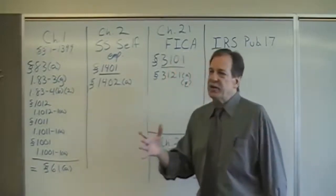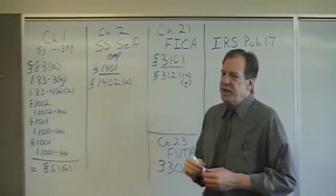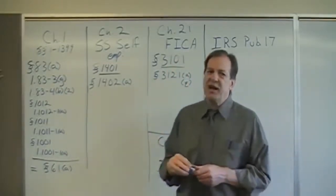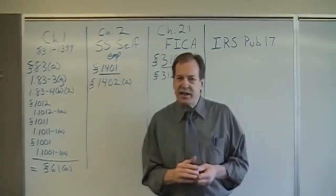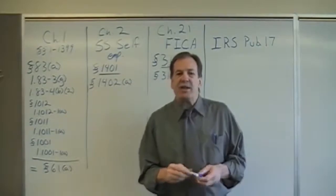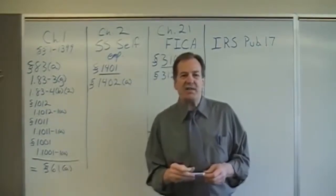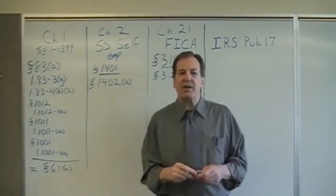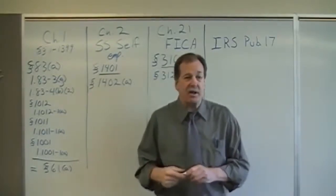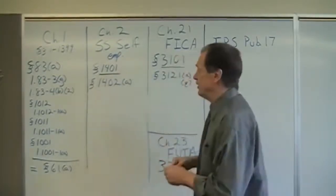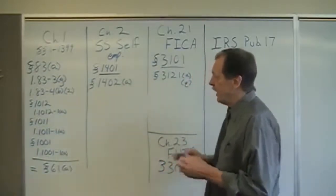Everybody agrees. Revenue ruling 2007-19, Chief Counsel of the Internal Revenue Service. Section 83A provides for the determination of what is to be included in gross income when property is transferred to an independent contractor or employee in connection with the performance of services.